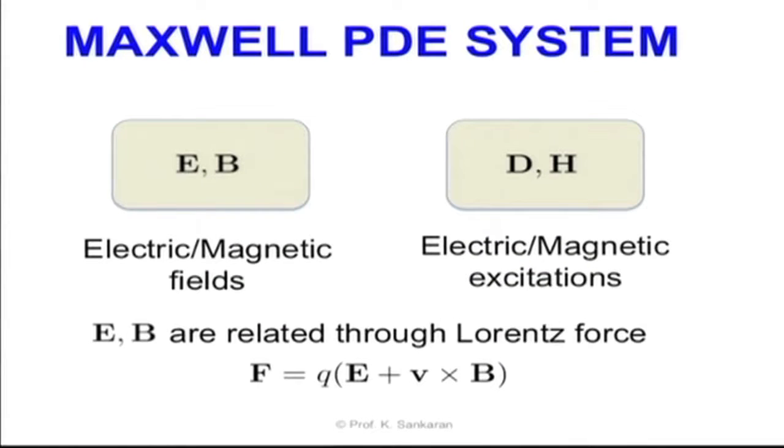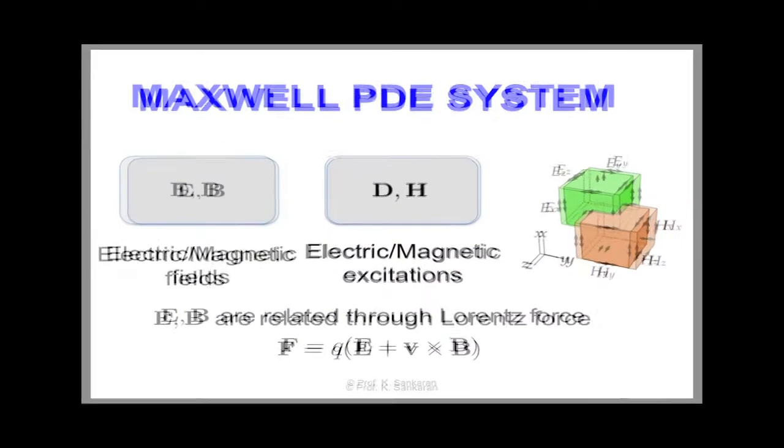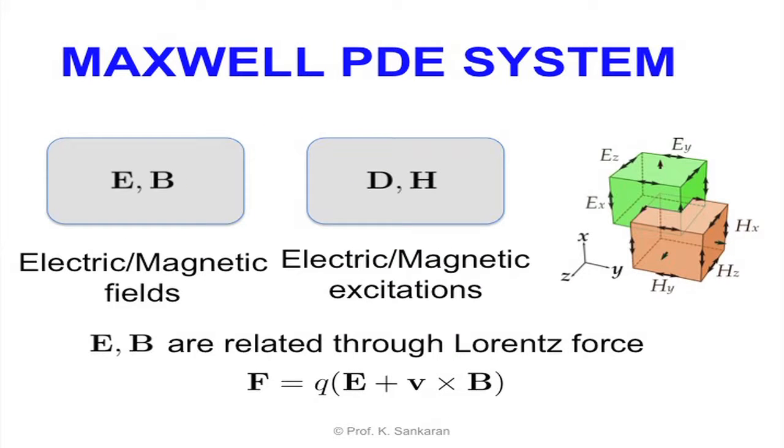We also reintroduced electric and magnetic excitations which we denoted as D and H respectively. The reason for coupling E and B and D and H fields became also clear while we studied the Yee's algorithm in the finite difference time domain method.